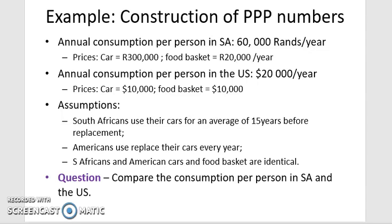We add the assumption that South Africans use their cars for an average of 15 years before replacement, while Americans replace their car once a year. South African and American cars and food baskets are identical. The question is: how can we use this information to compare consumption per person in South Africa and the USA using the two different approaches?